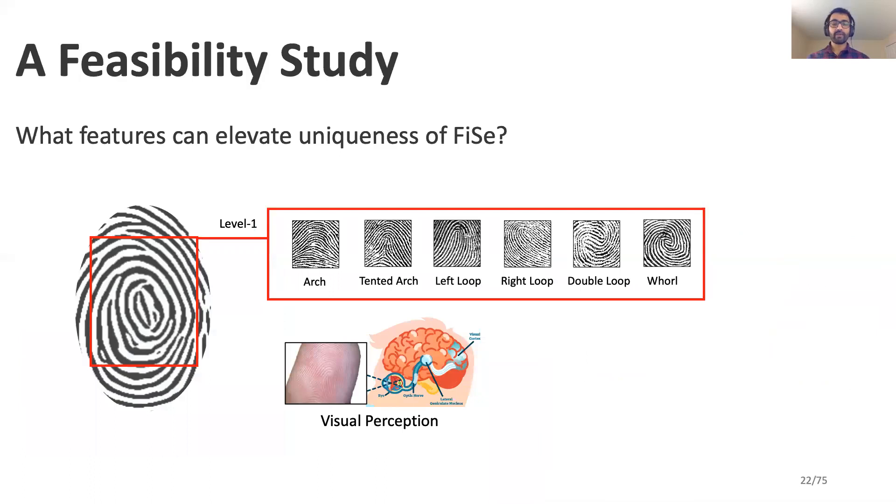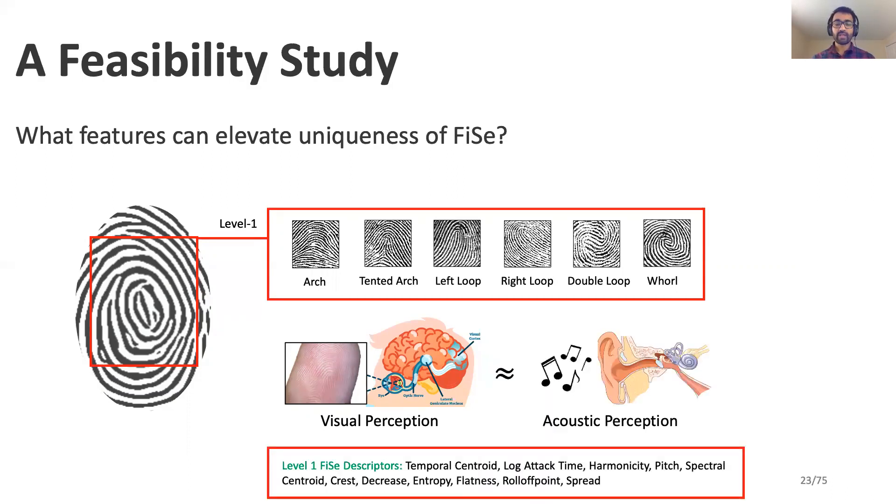In previous studies of fingerprint biometrics, researchers have classified fingerprint textures into three levels, where level one features depend on the visual perception of humans. They can be differentiated into arc, loop, and whorl structures. Similarly, we imagine that FICE dependency in the audio domain should be derived from features dependent on acoustic perception of humans, such as pitch and loudness. We extract a sequence of these features from every sample recorded during our feasibility study.